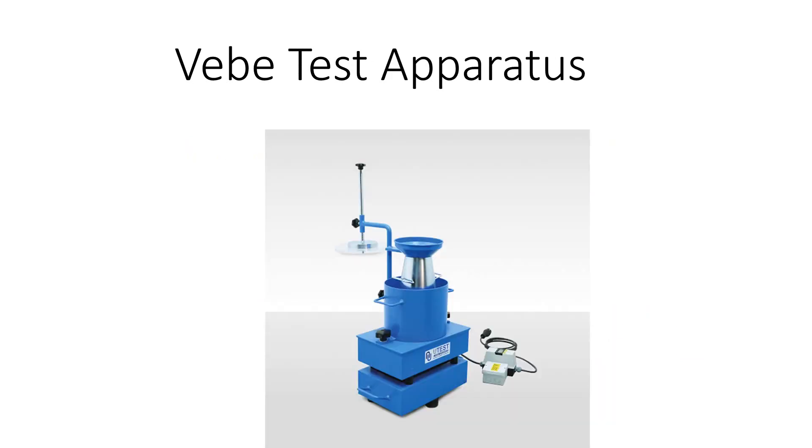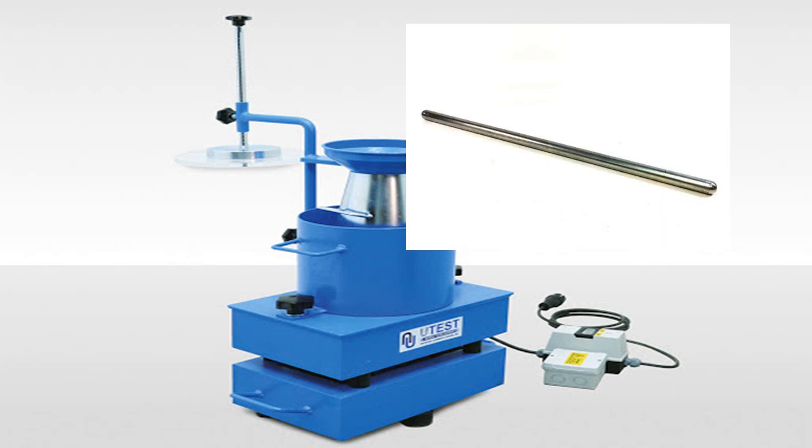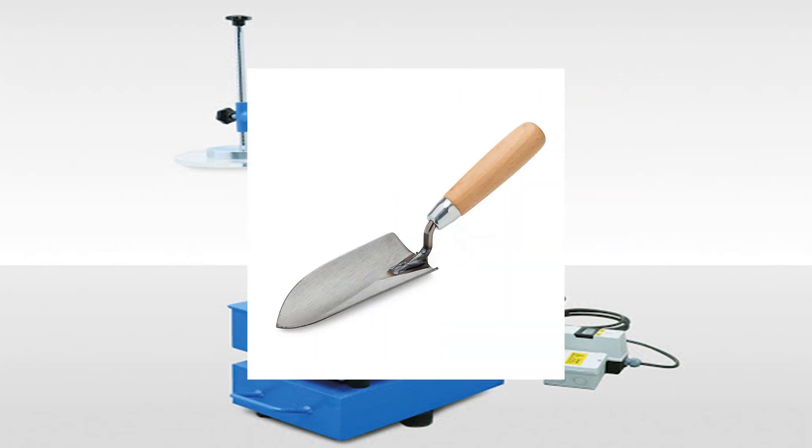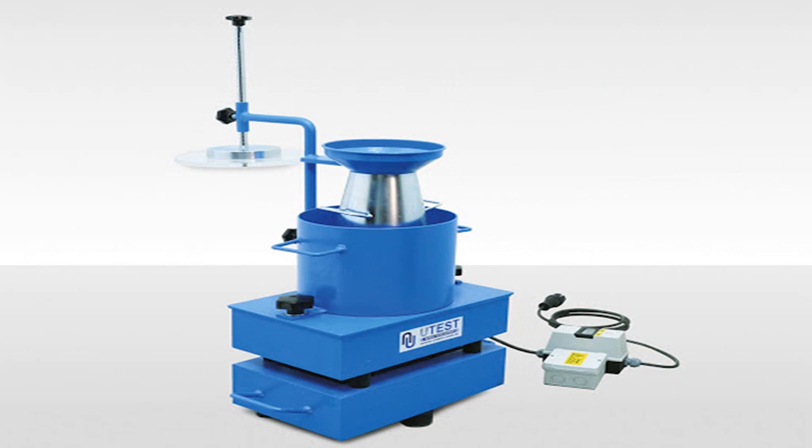The apparatus for the test are VEB consistometer, tamping rod, stopwatch, and trowel. The procedure of the test will be as follows: perform the slump test inside the container.